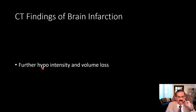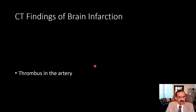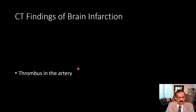Further hypo-intensity and volume loss occur later. If the infarction is large and very old, it becomes liquefied — so hypo-intense it looks like ventricular fluid — with loss of volume that pulls neighboring structures. Sometimes a thrombus in the artery can be seen, confirming ischemia. That is not a usual finding but can sometimes be seen and provides an opportunity for thrombectomy or thrombolysis.